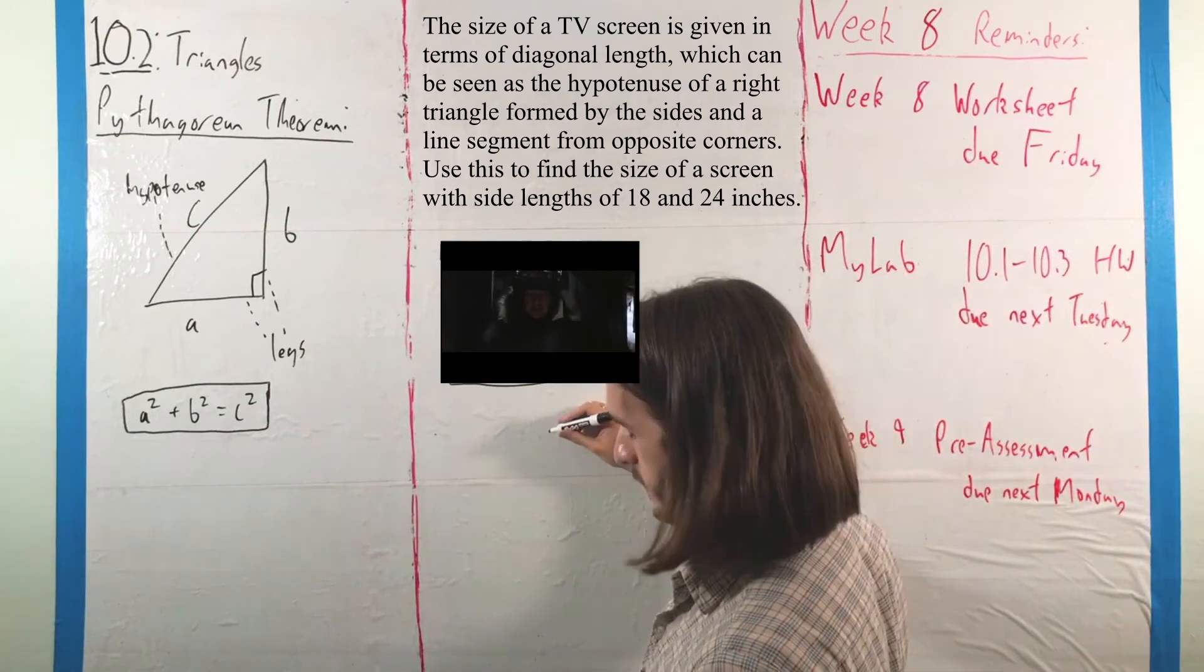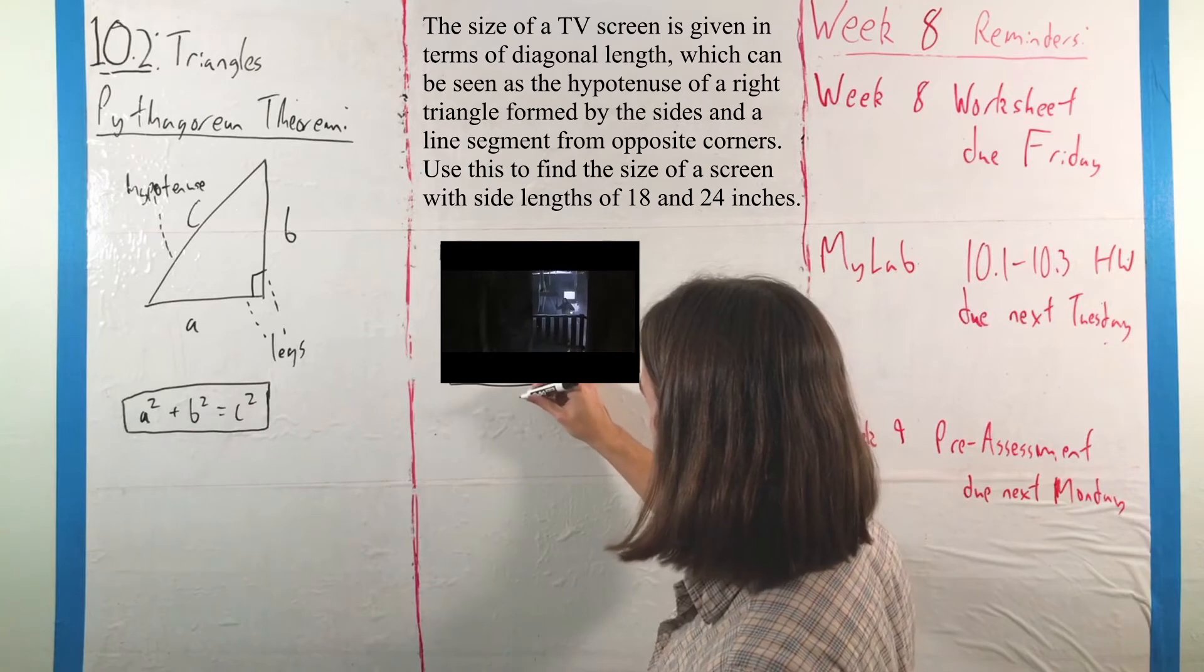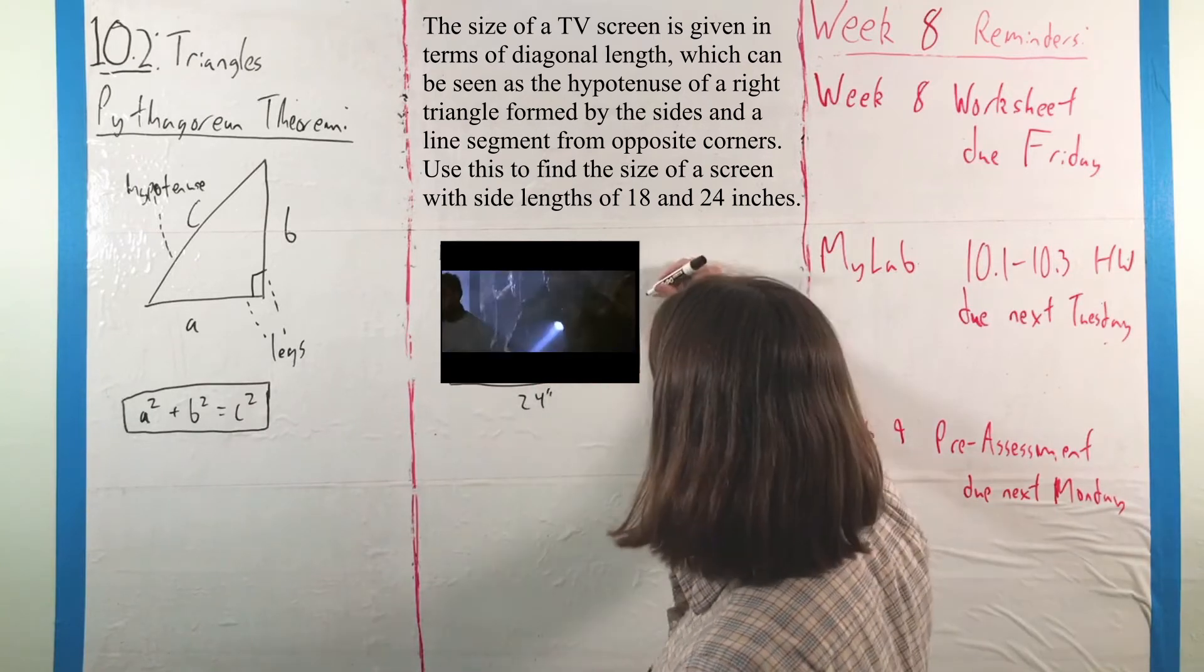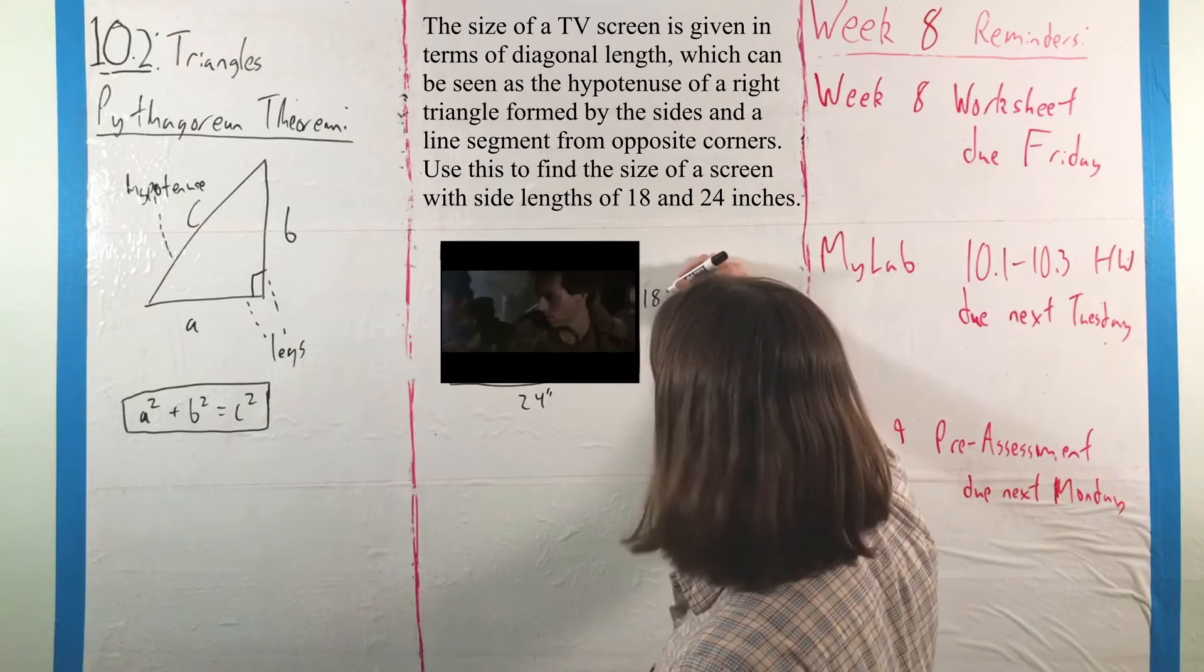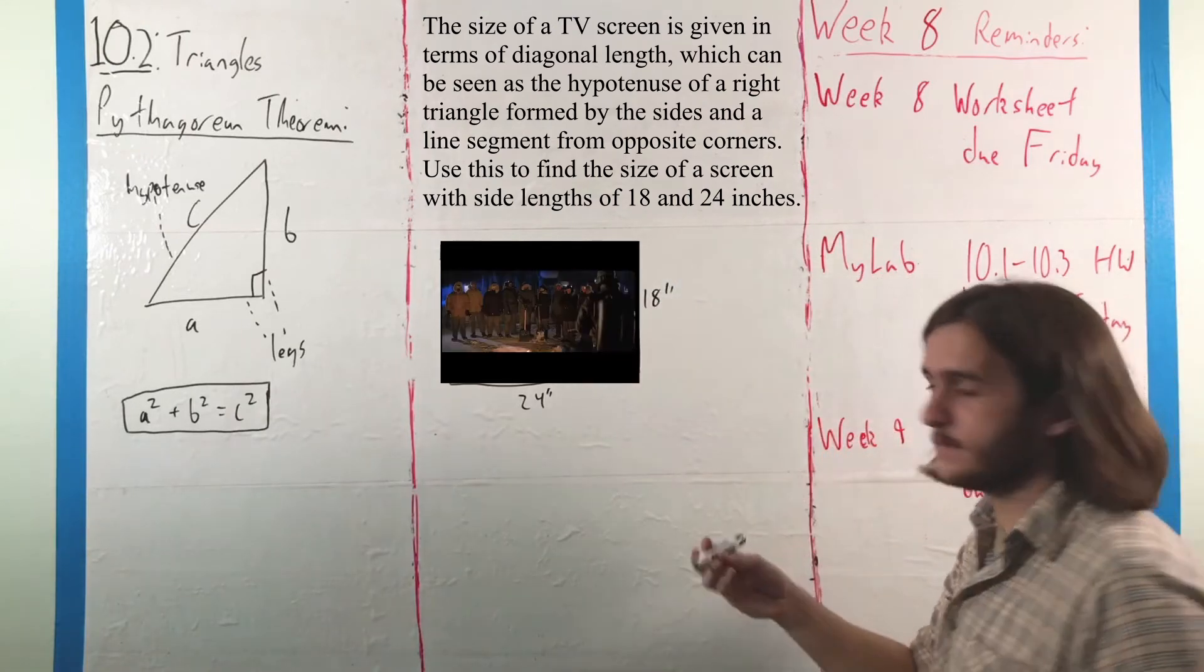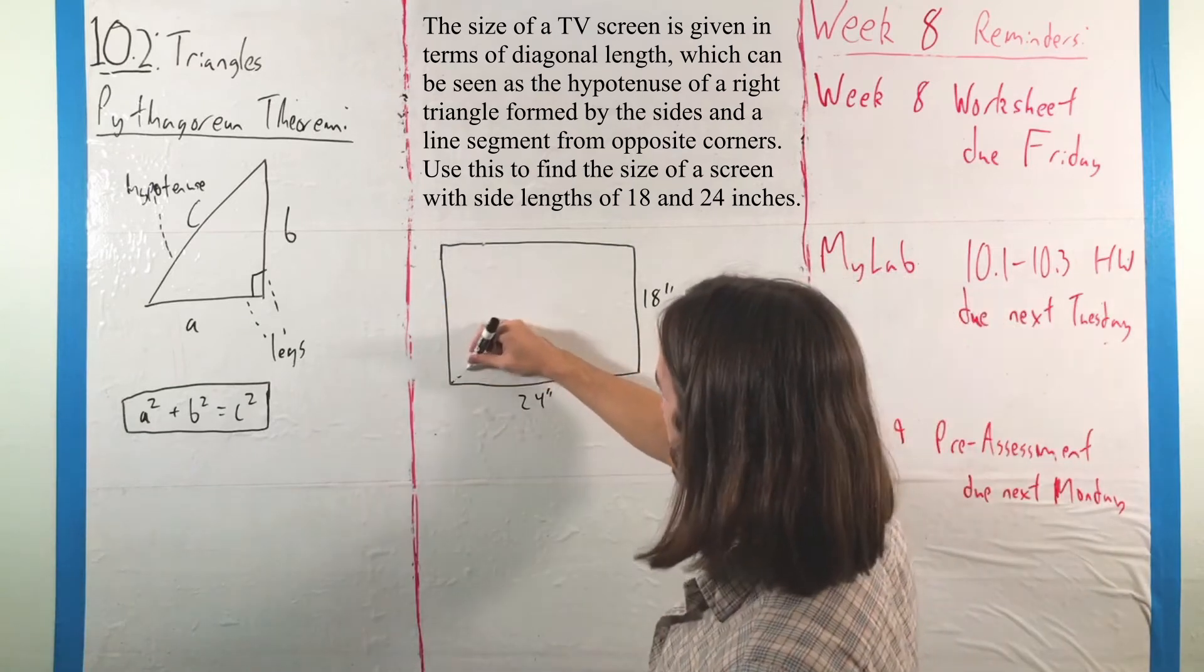So on here, we're going to make the lengths here, that's 24 inches. This is 18, and what we're talking about with the right triangle that we can form is if we go along this diagonal here.